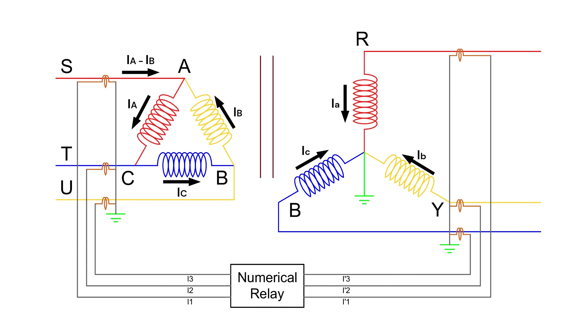With modern numerical relays, we no longer need special CT secondary connections to filter out zero-sequence currents. Both the delta and star side CTs are connected in star and fed directly into the relay. The relay then calculates the zero-sequence current using the formula I0 equals the sum of Ia, Ib and Ic, divided by 3.